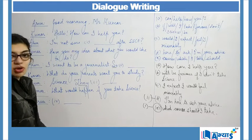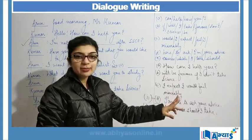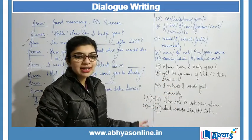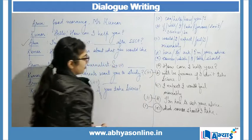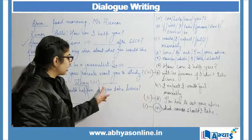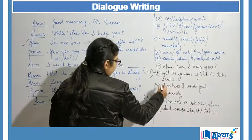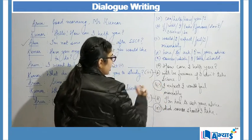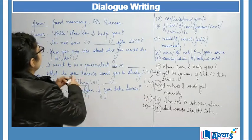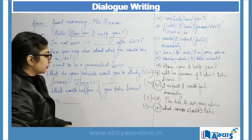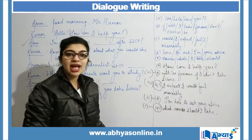For the third blank, after Arun says 'Science' when asked what his parents want him to study, the sentence 'They will be furious if I don't take science' fits correctly. For the fourth blank, after Kumar asks 'What would happen if you take science?', the remaining sentence 'I expect I would fail miserably' fits as the fourth blank. The dialogue is now complete.